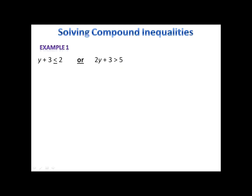In our first example, we have a union of two sets. The word OR tells me that this is a union. We simply solve each of the inequalities independently and then we'll deal with the set after. We begin on the first inequality by subtracting 3, and that gives us y is less than or equal to negative 1. We then move on to the second inequality where we first subtract 3 and then divide both sides by 2, giving us y is greater than 1.